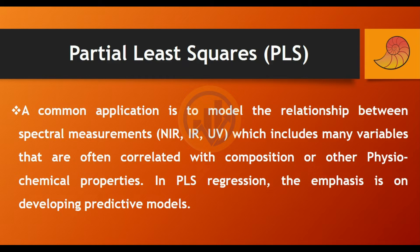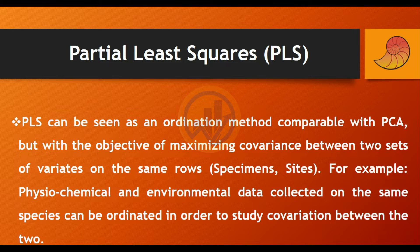In Partial Least Square regression, the emphasis is on developing predictive models. PLS can be seen as an ordination method compared to PCA (Principal Component Analysis), but with the objective of maximizing covariation between two sets of variables on the same rows — for example, physicochemical and environmental data collected on the same species can be ordinated to study the covariance between the two.